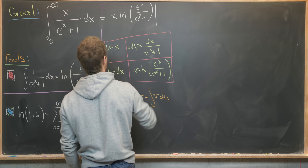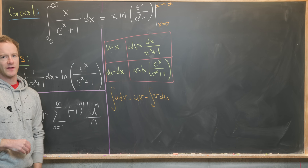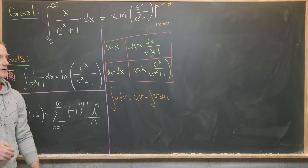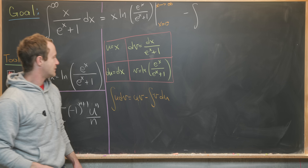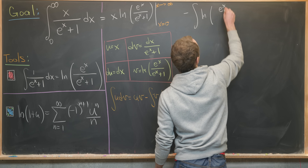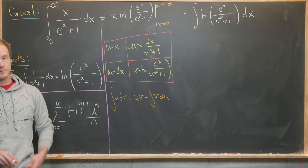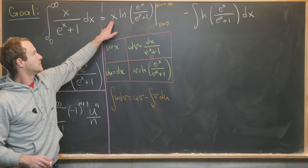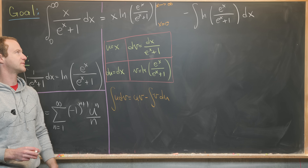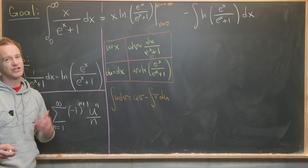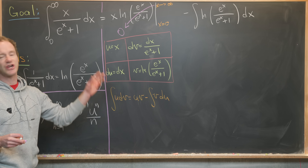We evaluate that from x equals zero to x approaching infinity. Plugging in zero gives zero times the natural log of one-half, which is zero. As x approaches infinity we have an indeterminate form, but it's easy to check with L'Hôpital's rule that it also goes to zero. So the boundary term vanishes entirely. Then we need minus the integral of v du, which is minus the integral from zero to infinity of the natural log of e to the x over e to the x plus one dx.